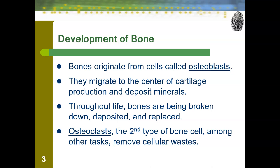The second type of bone cell is osteoclasts, and they do a lot of different tasks. One of them is to remove cellular waste. They essentially help keep bones healthy.